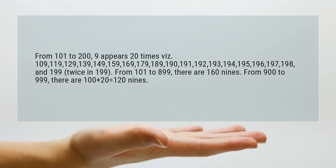From 101 to 899, there are 16 nines. From 900 to 999, there are 100 plus 20, which equals 120 nines.